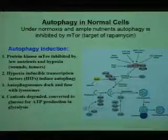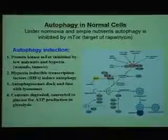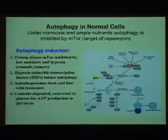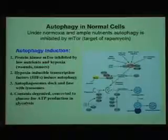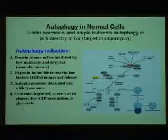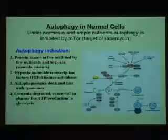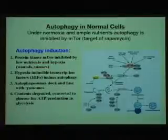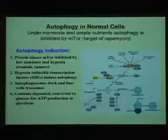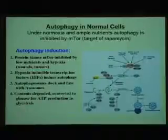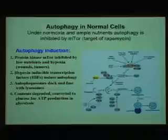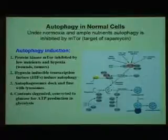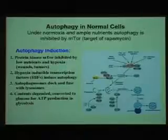Does autophagy exist in normal cells? Under normal conditions with normal oxygen supply and normal nutrients, autophagy is inhibited by a protein kinase named mTOR. When nutrients become low and there is hypoxia, this protein kinase is inhibited, and then this induces autophagy. On the other hand, hypoxia-inducible transcription factors also induce autophagy. Autophagosomes form, dock, and fuse with lysosomes to produce autophagolysosomes, in which contents are eventually degraded and converted to glucose for ATP production in glycolysis.